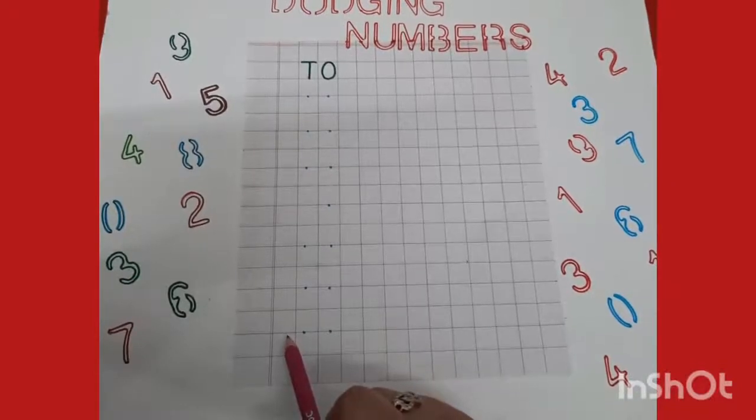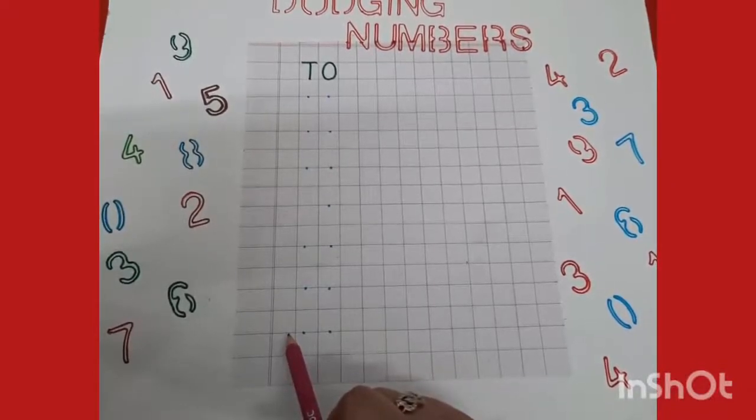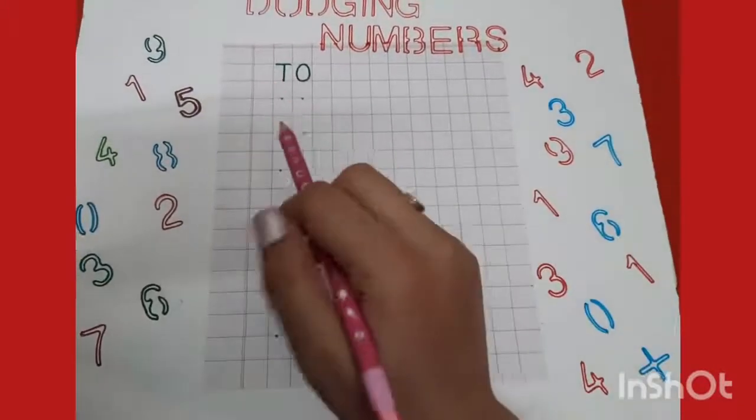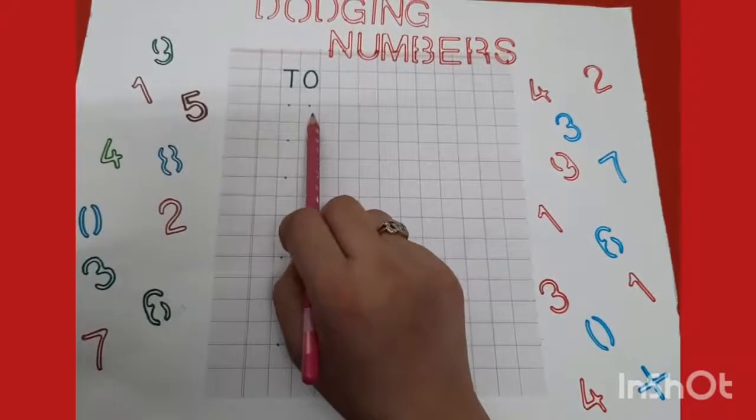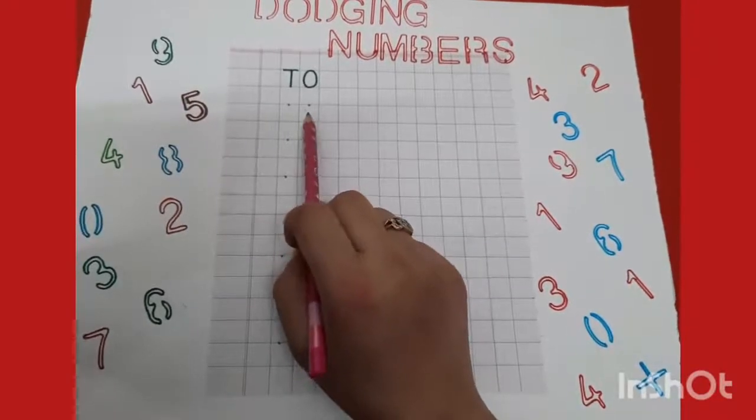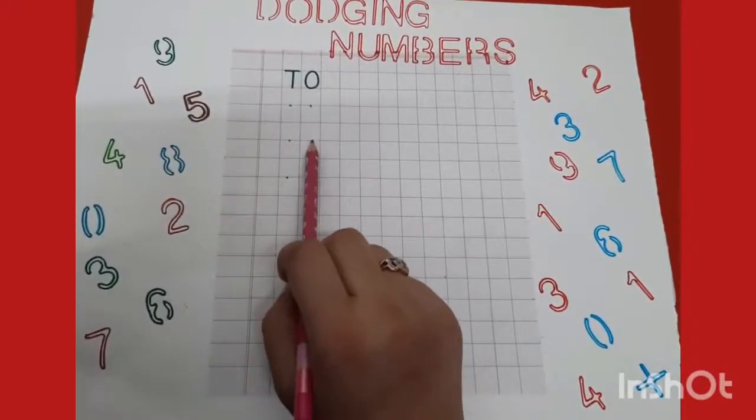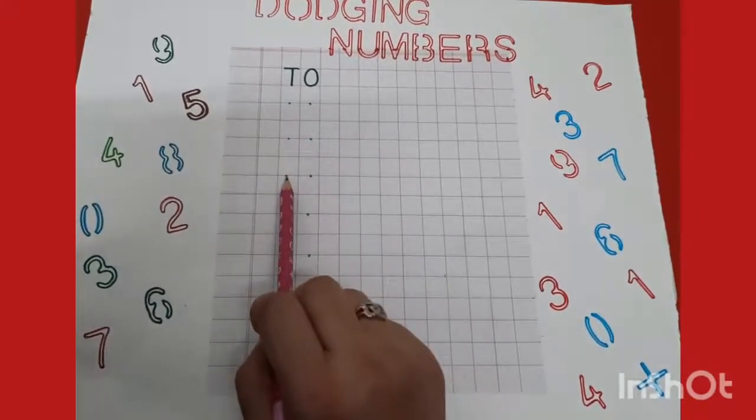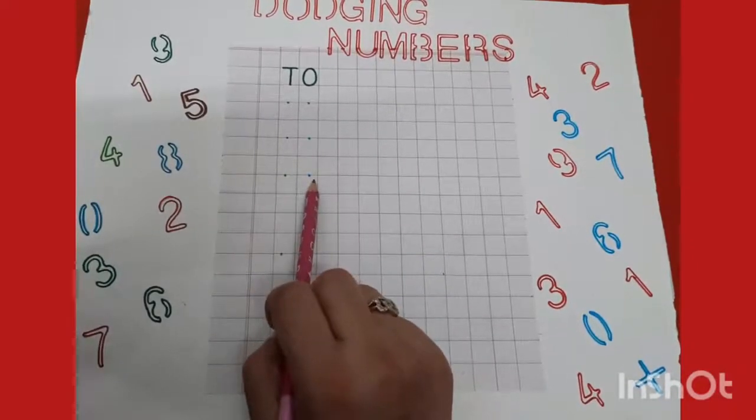I repeat one more time. Listen carefully. First number is one, nine, nineteen. Second is two, nine, twenty-nine. Next, three, one, thirty-one.